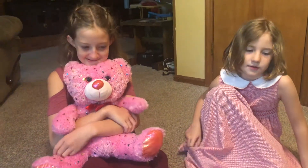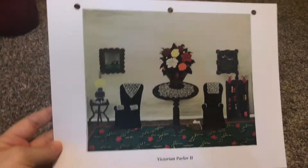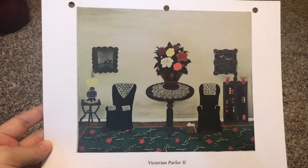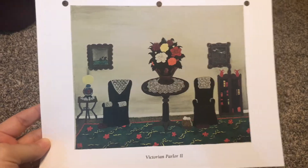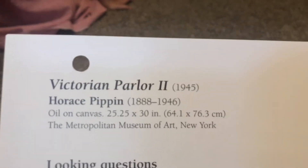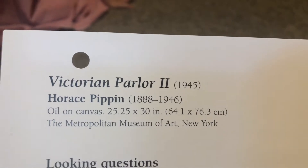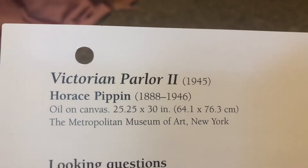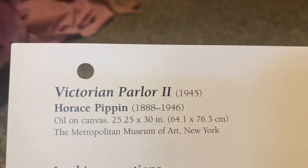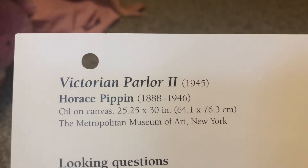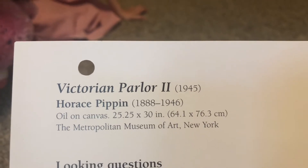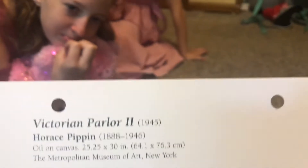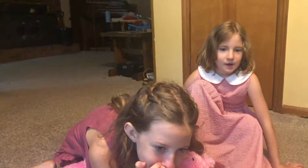Today we're going to do an art discussion on Victorian Parlor 2. Victorian Parlor 2 was made in 1945 by Horace Pippin. One interesting fact is he died in 1946, so he made this about a year before he died. This was oil on canvas.